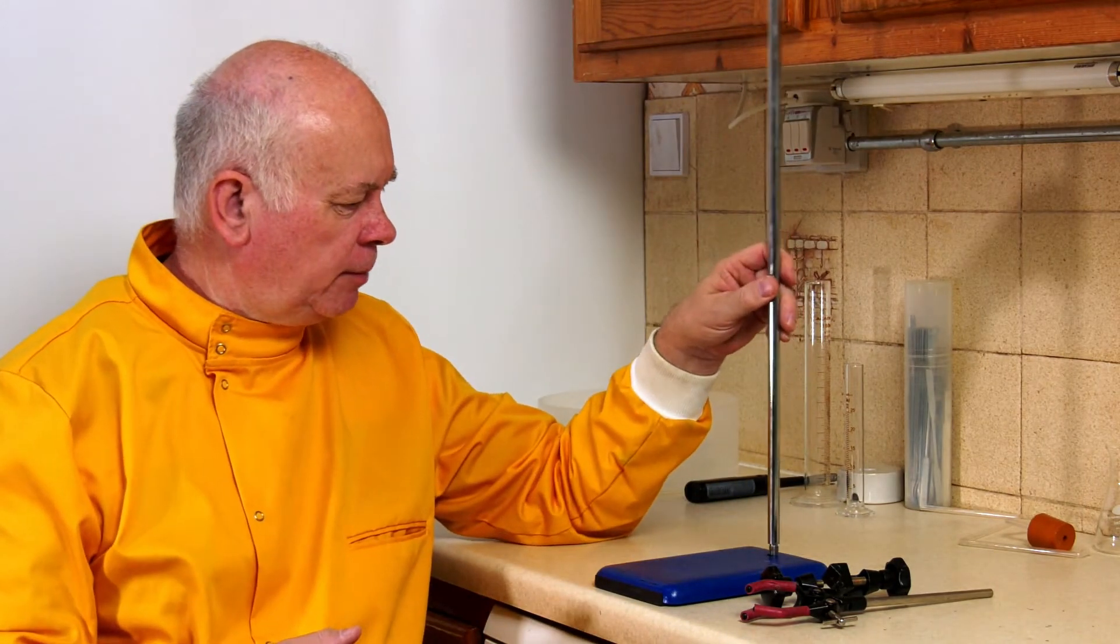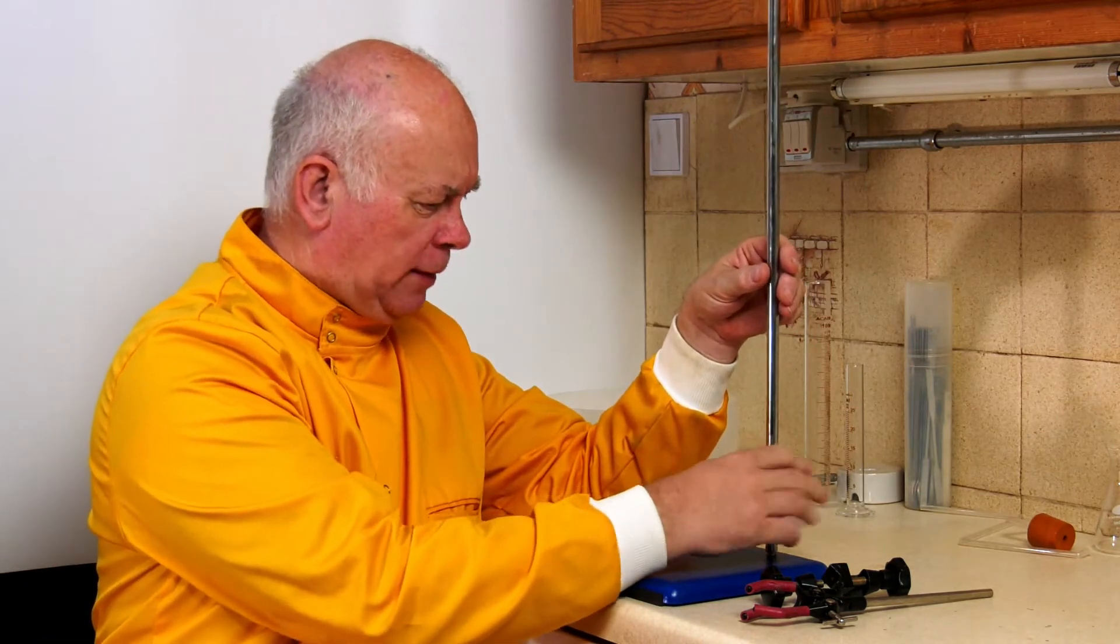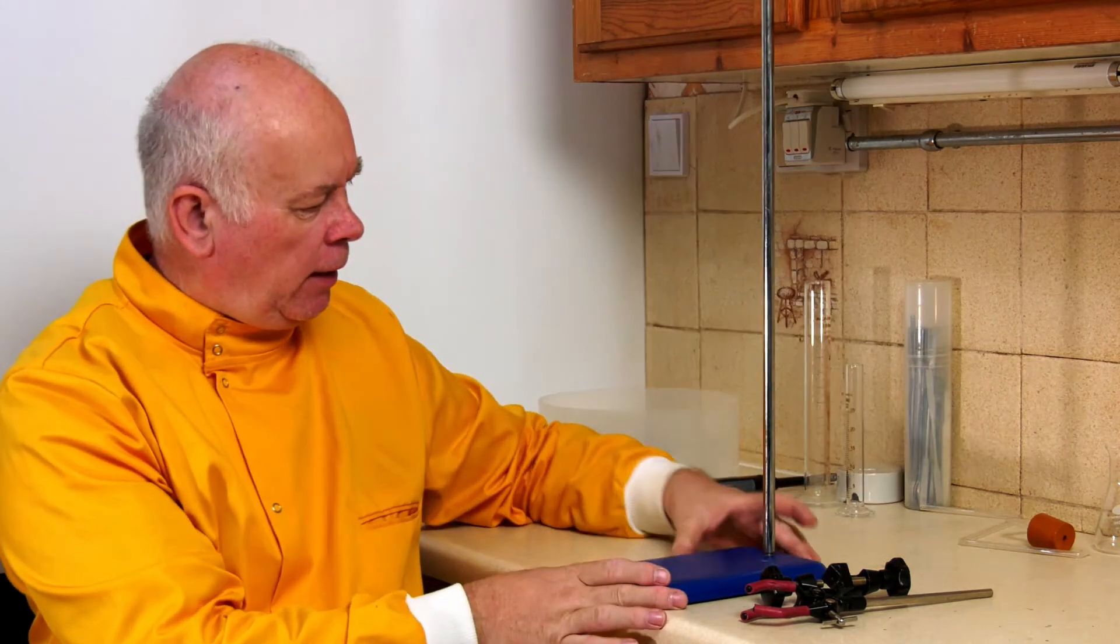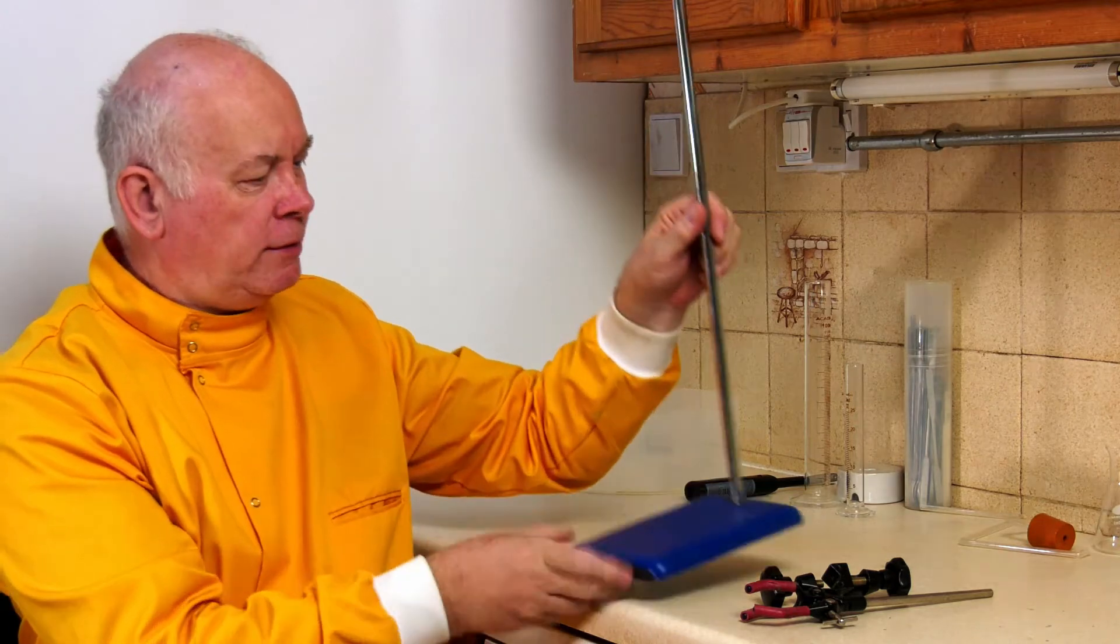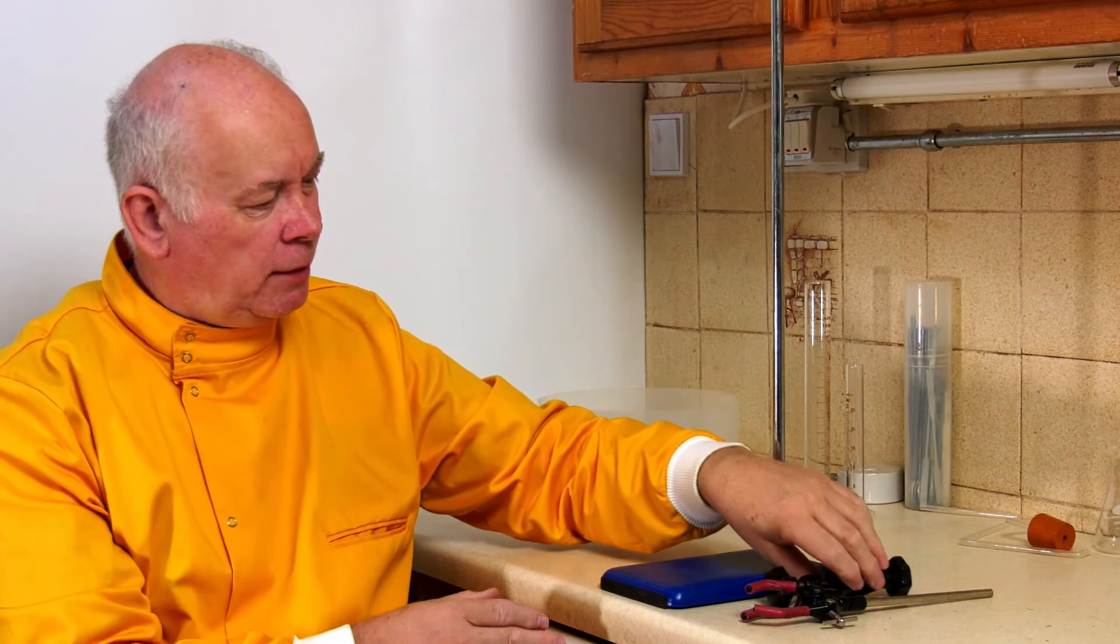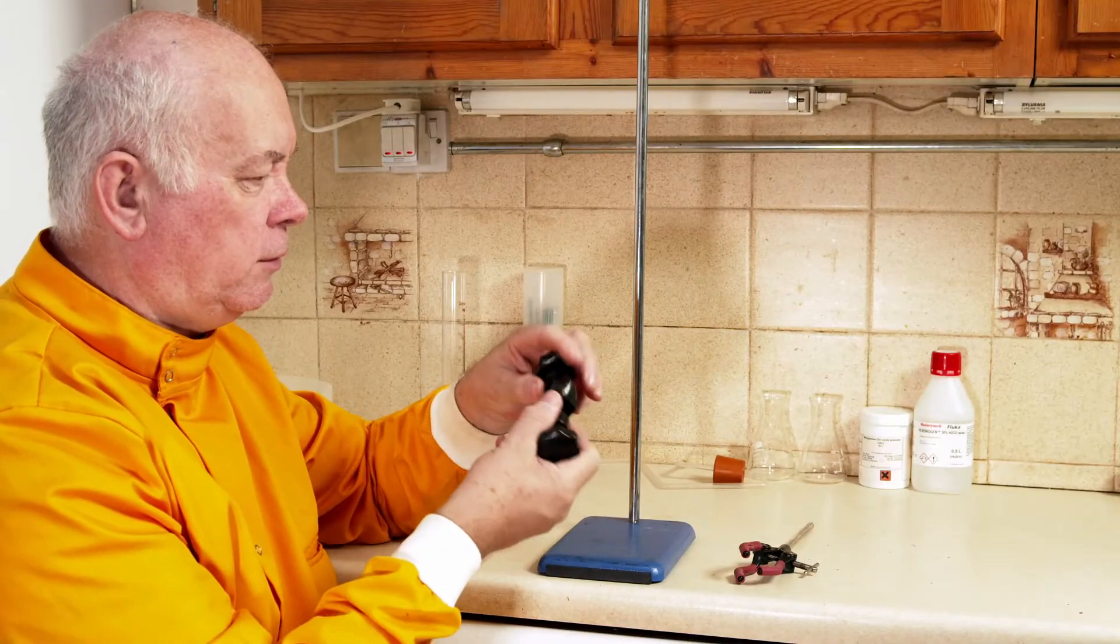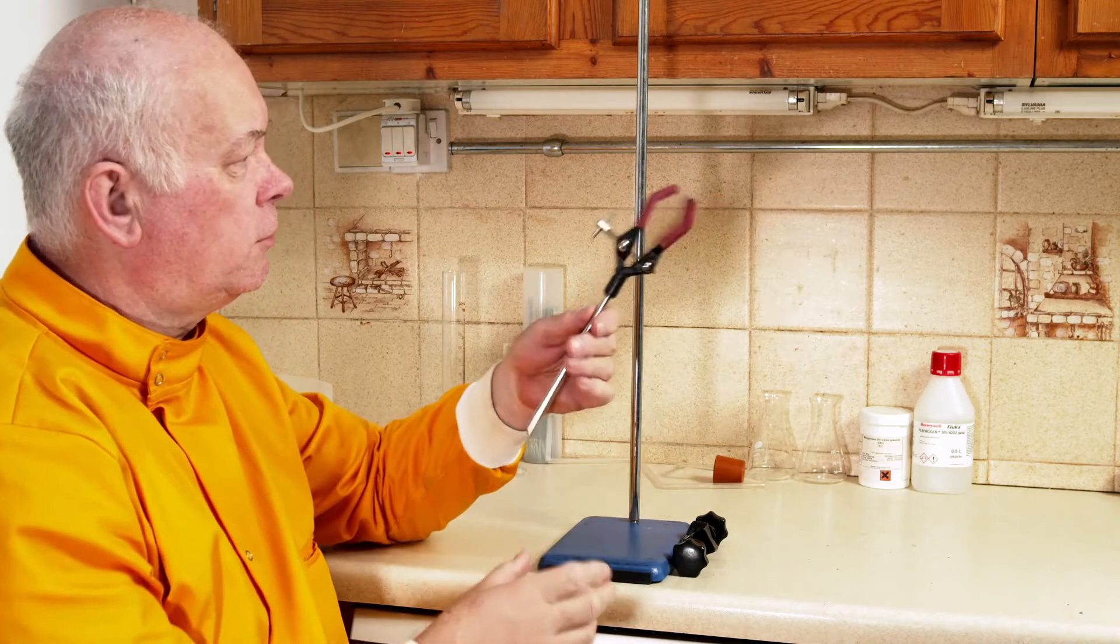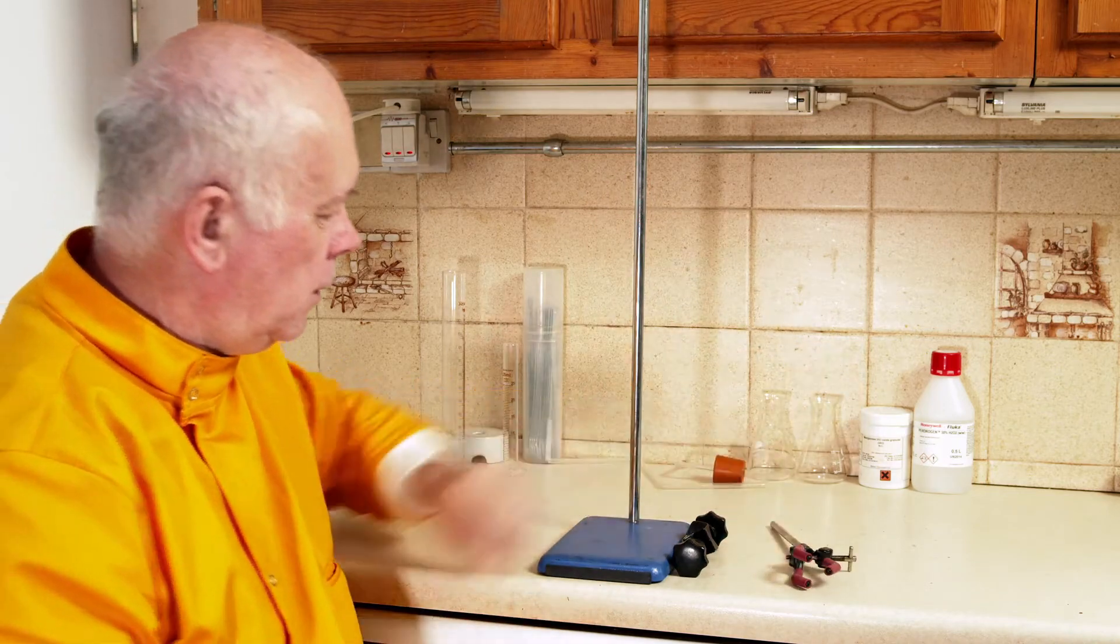We can set them up to be used how we want. So normally in a classroom you would get a retort stand looking like this with a metal rod already attached to the base, and what comes with it is this funny device called a boss and to attach things we have a clamp. Let's have a look and see how to set them up.